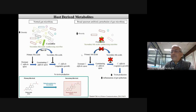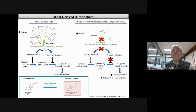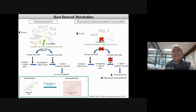For example, a mycobacterium called C. scindens contributes an enzyme that converts a primary bile acid to a secondary bile acid, and if secondary bile acid is present, it inhibits the vegetative growth of Clostridium difficile and production of toxins. If there is a dysbiosis between these two microorganisms, that leads to a disease situation. The key is the microbiome-derived enzyme converting primary bile acid to secondary bile acid.